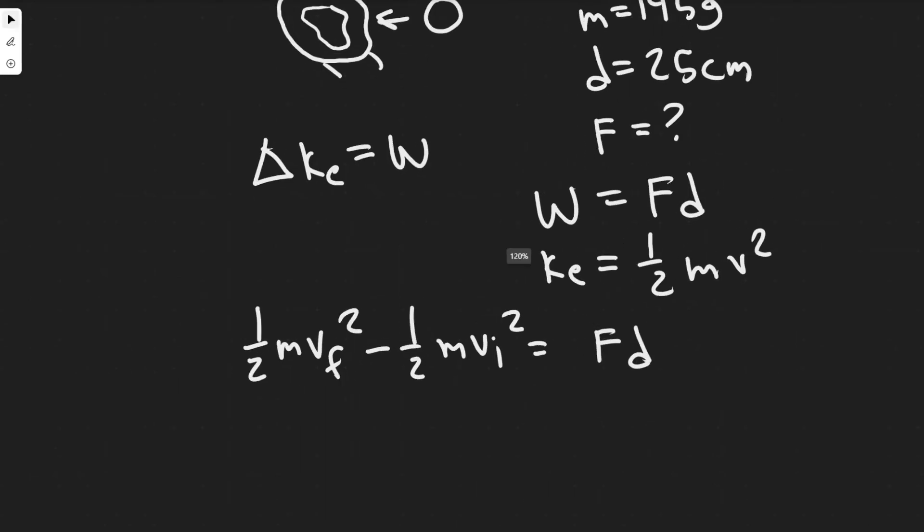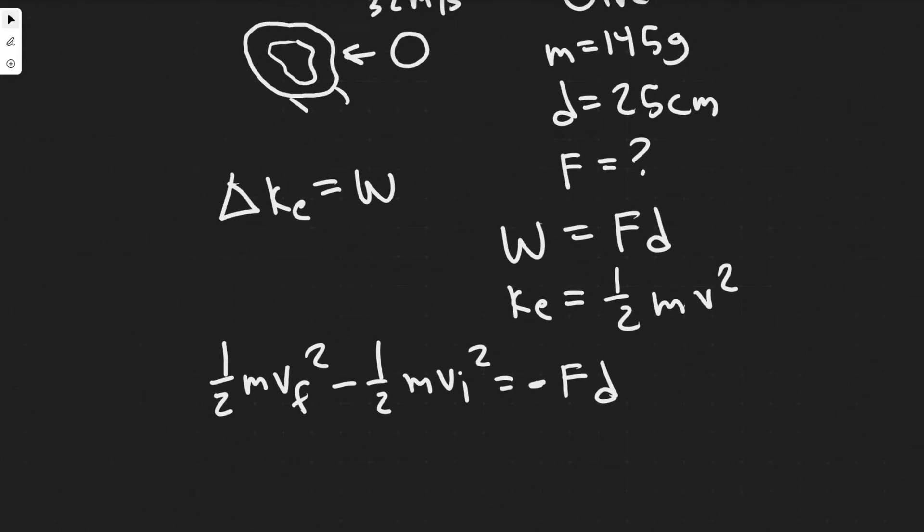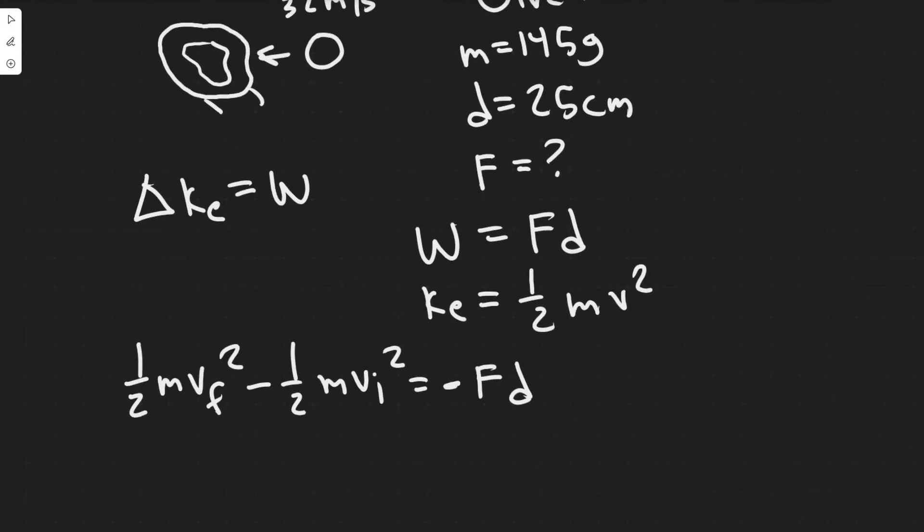But what I want you to keep in mind is that this is the work done onto the ball. And so you need to understand that this is actually going to be negative. The reason for that is if the force and the direction are pointing opposite ways, then that means it's going to be negative. Because the real formula is work equals force times distance times the cosine of theta. And so theta is the angle between the force.